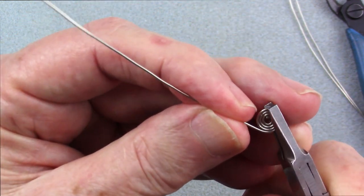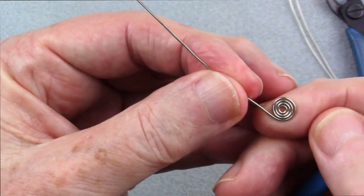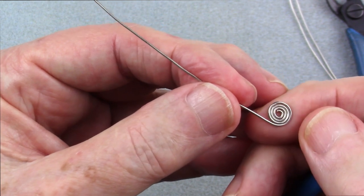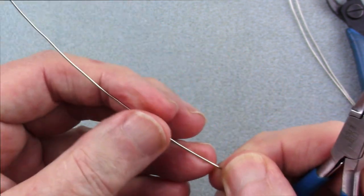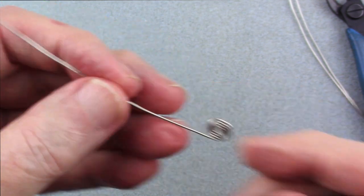Now using German silver, there's a lot of spring back. And so just be aware of that. If this was copper, we'd be done already. All right, there's the first one. We're going to do the same thing with the second wire.